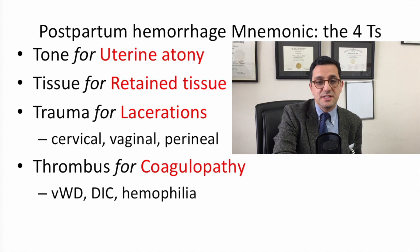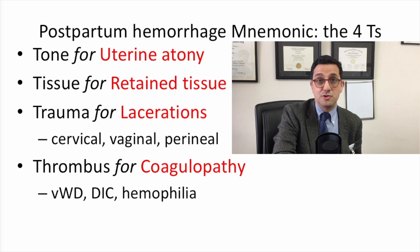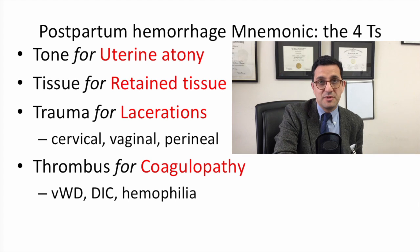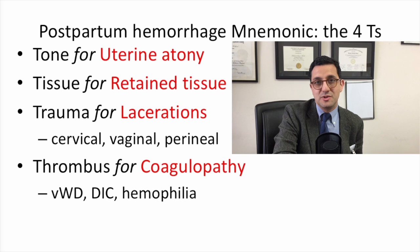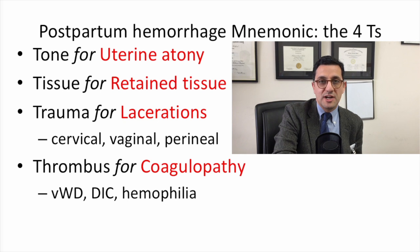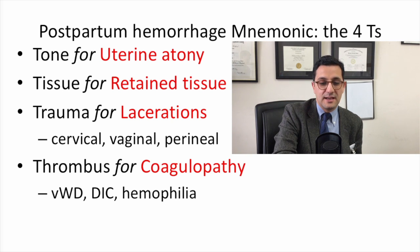The third cause is trauma or lacerations, which can be cervical, vaginal, or perineal. It's important not to underestimate the amount of bleeding from these lacerations. One specific trauma cause is uterine inversion — from excessive pulling on the placenta — where the uterus is inverted inside out, requiring immediate manual replacement and possibly other surgical techniques.